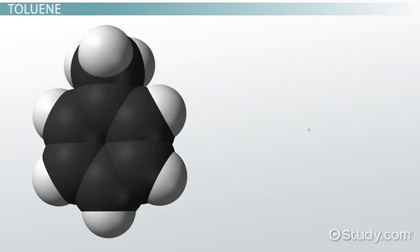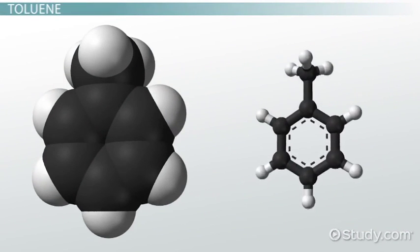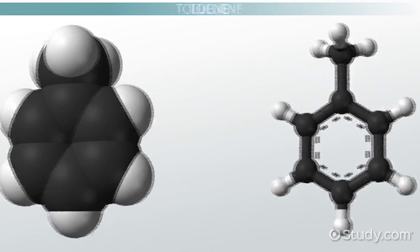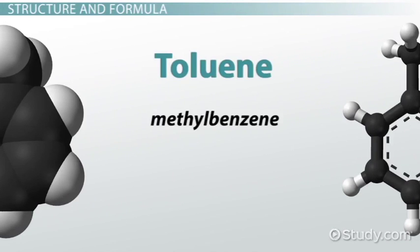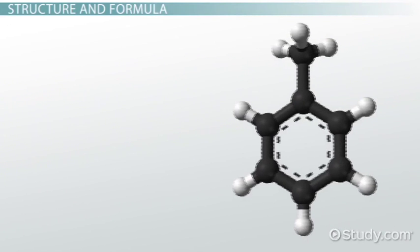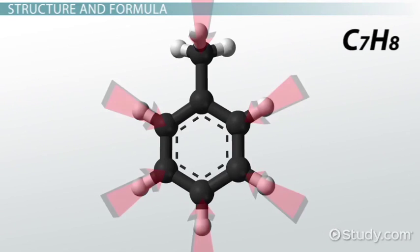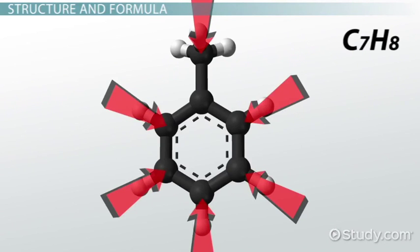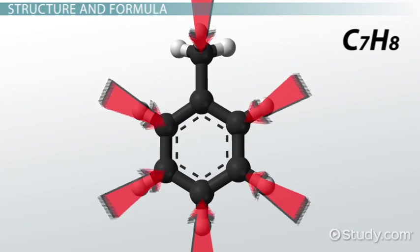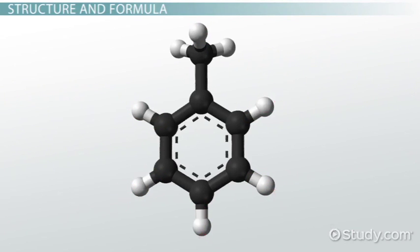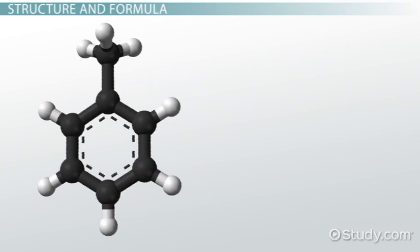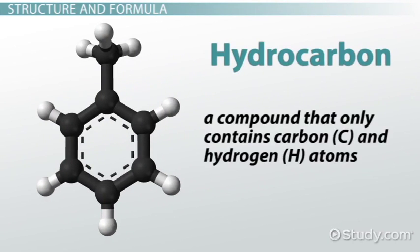Beyond its uses, toluene's chemical structure is quite interesting in its own accord. Toluene, also known as methyl benzene, is an organic chemical compound. It is categorized as such because of the presence of carbon atoms in its chemical formula C7H8. The chemical formula of toluene has seven carbon atoms and eight hydrogen atoms, which means it is classified as a hydrocarbon — a compound that only contains carbon and hydrogen atoms.